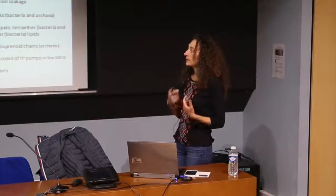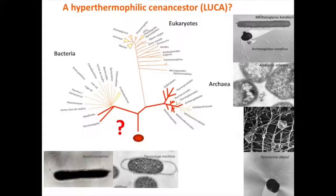Hyperthermophiles have attracted the attention of scientists because there are models on the origin of life proposing that perhaps life evolved at high temperatures. Also, scientists observing the distribution of hyperthermophilic organisms in early trees of life built on molecular markers — in particular ribosomal RNA genes — realized that organisms placed at the base of these branches, in the case of archaea and bacteria, corresponded to hyperthermophilic organisms.